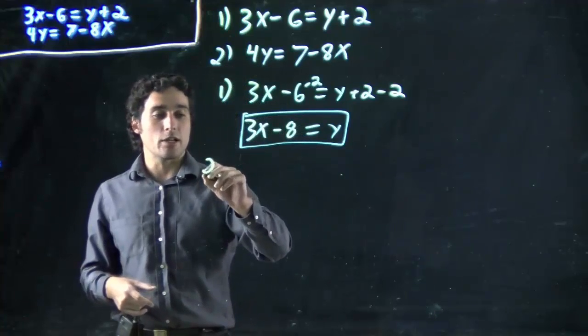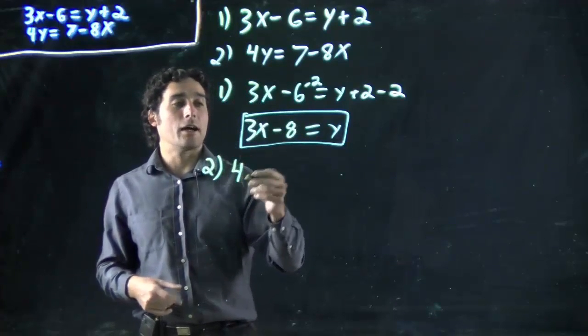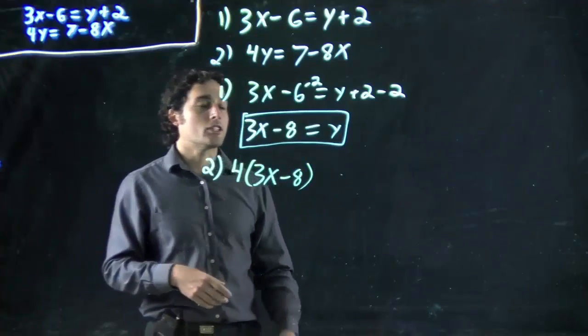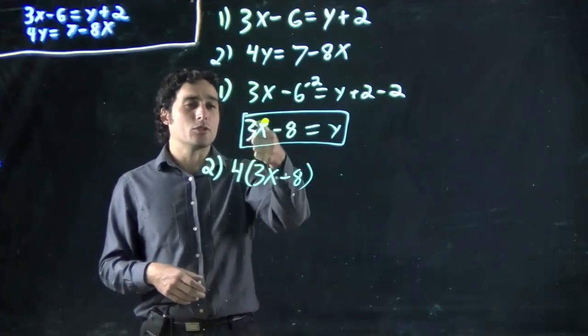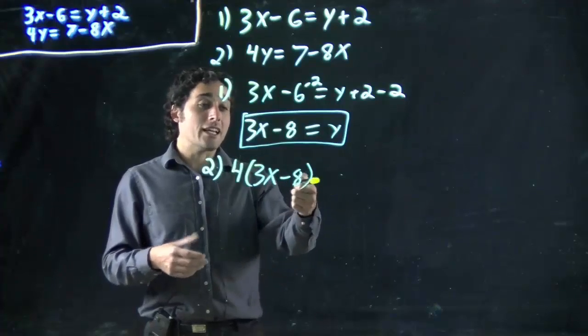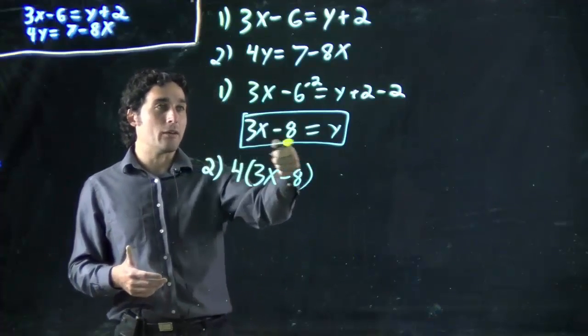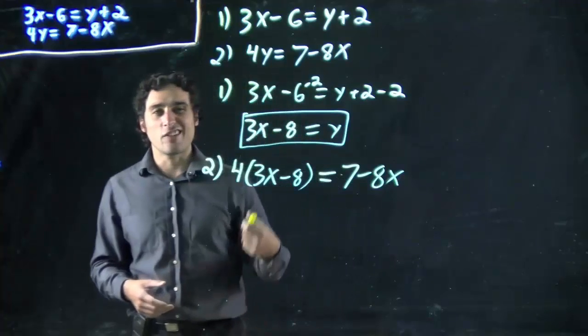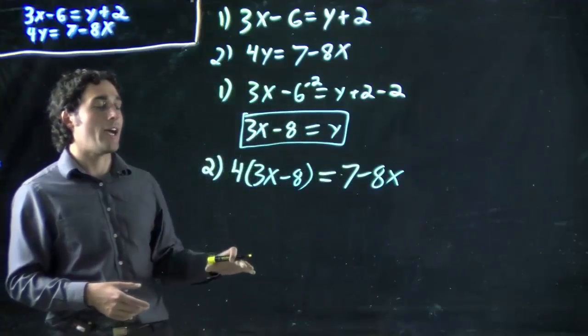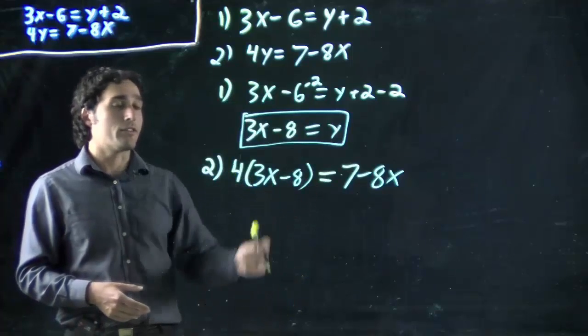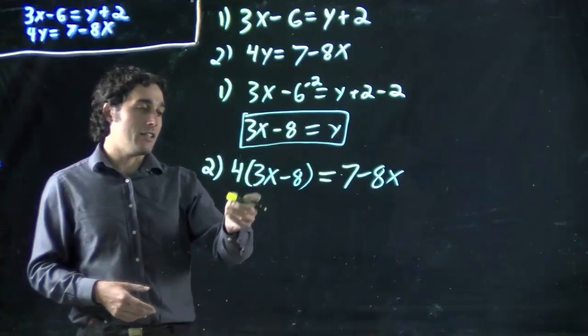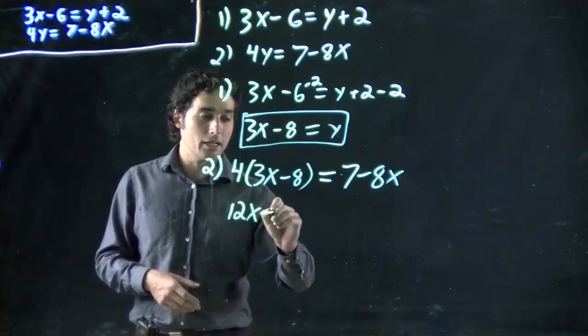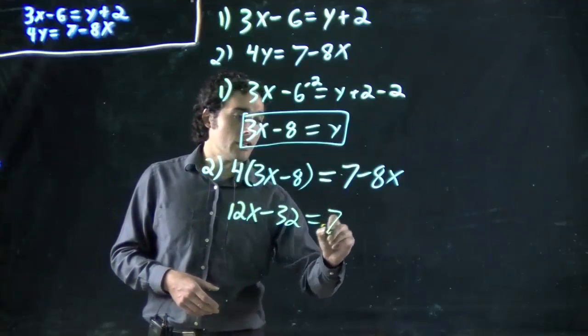In equation 2 where I have 4y, well I know y is equal to this. I can replace that y with this term right here. So now I'm using equation 2, and I've got 4 times y, or 4 times 3x minus 8, and that's still equal to 7 minus 8x. Now I've got to solve for x. I've got to get rid of this bracket and get x's that I can combine. So multiply the 4 in.